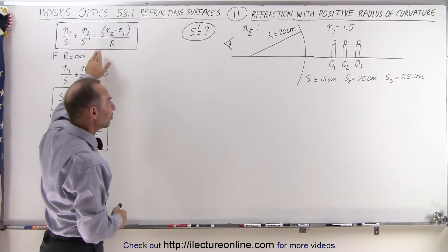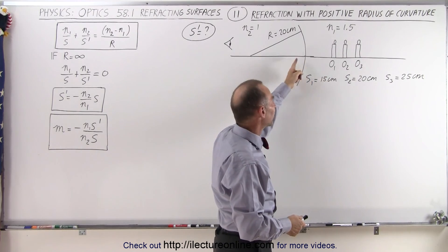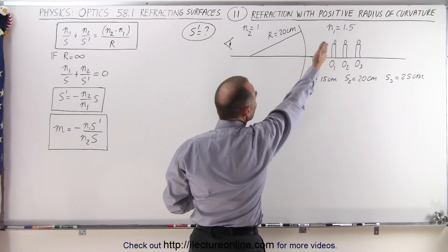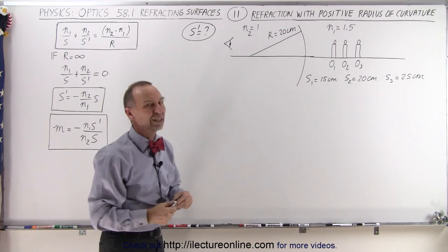which gives us a positive radius of curvature. We're still going to use the same equation. Notice I placed the objects at the same location relative to the boundary, at 15, 20, and 25 centimeters away, on the side where the index of refraction is 1.5, and on this side the index of refraction is equal to 1.